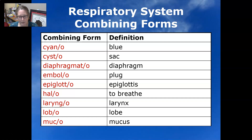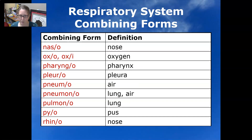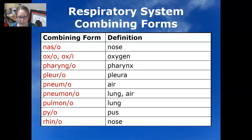Laryngo means larynx. Lobo means lobe. Muco means mucus. Naso is nose. Oxo or oxy mean oxygen. Pharyngo means pharynx. Pleuro means pleura. Pneumo means air and pneumono, pulmono means lung.